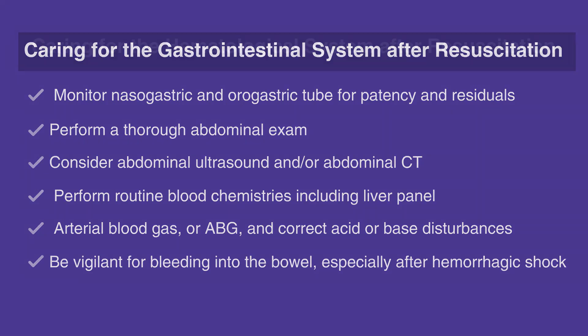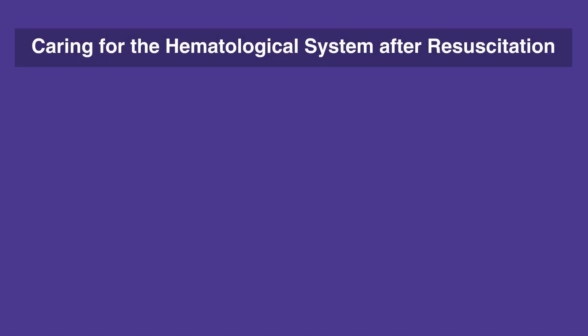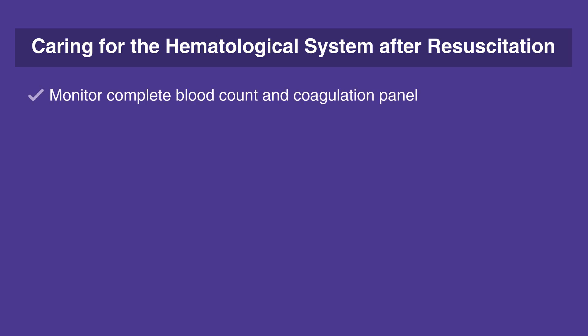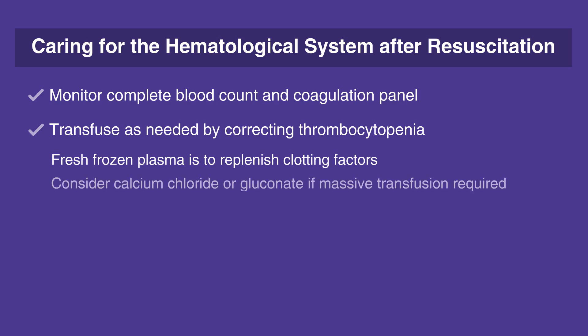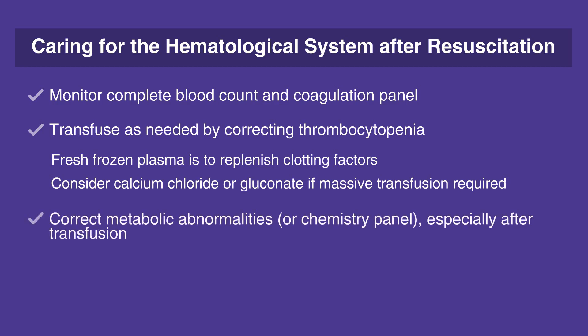When caring for the hematological system after resuscitation, follow this checklist. Monitor complete blood count and coagulation panel. Transfuse as needed by correcting thrombocytopenia. Fresh frozen plasma is used to replenish clotting factors. Consider calcium chloride or gluconate if massive transfusion is required. Correct metabolic abnormalities with a chemistry panel, especially after transfusion.